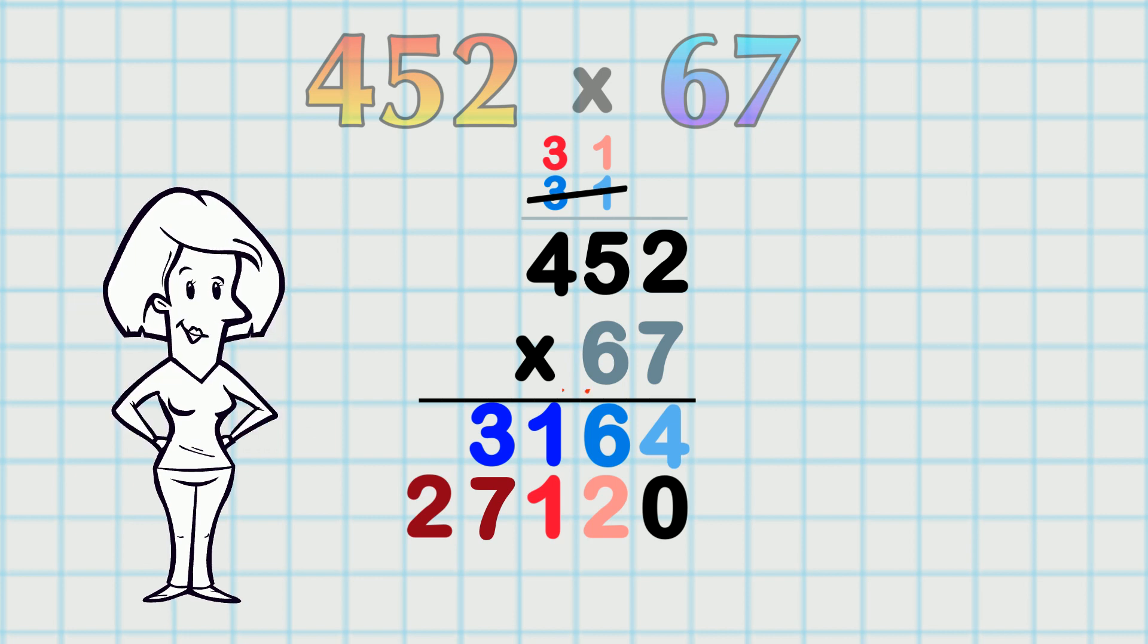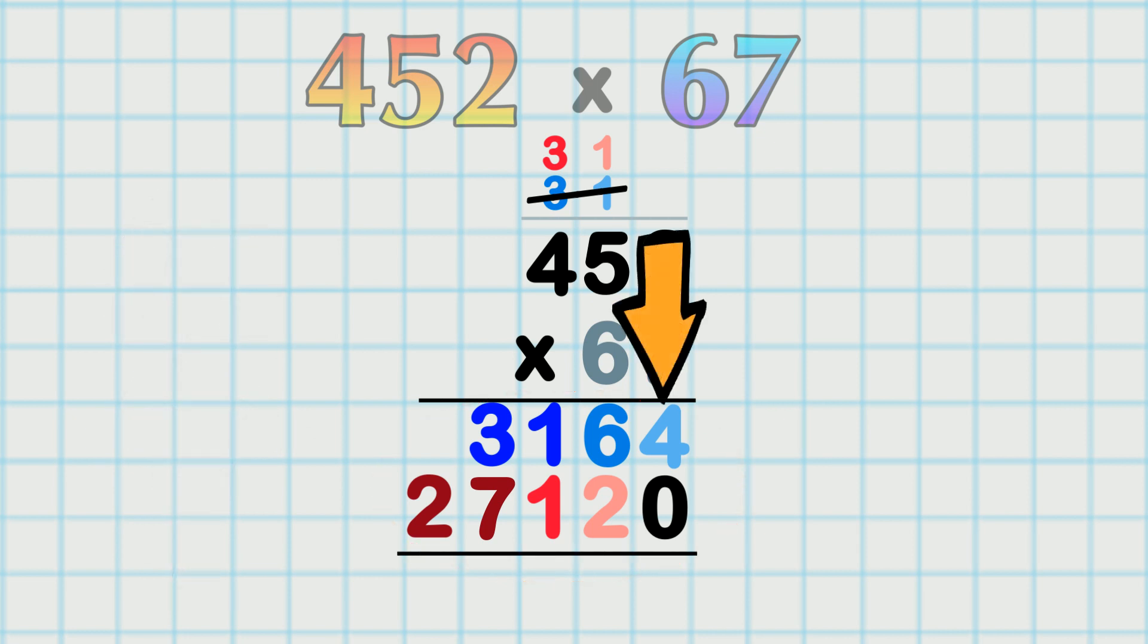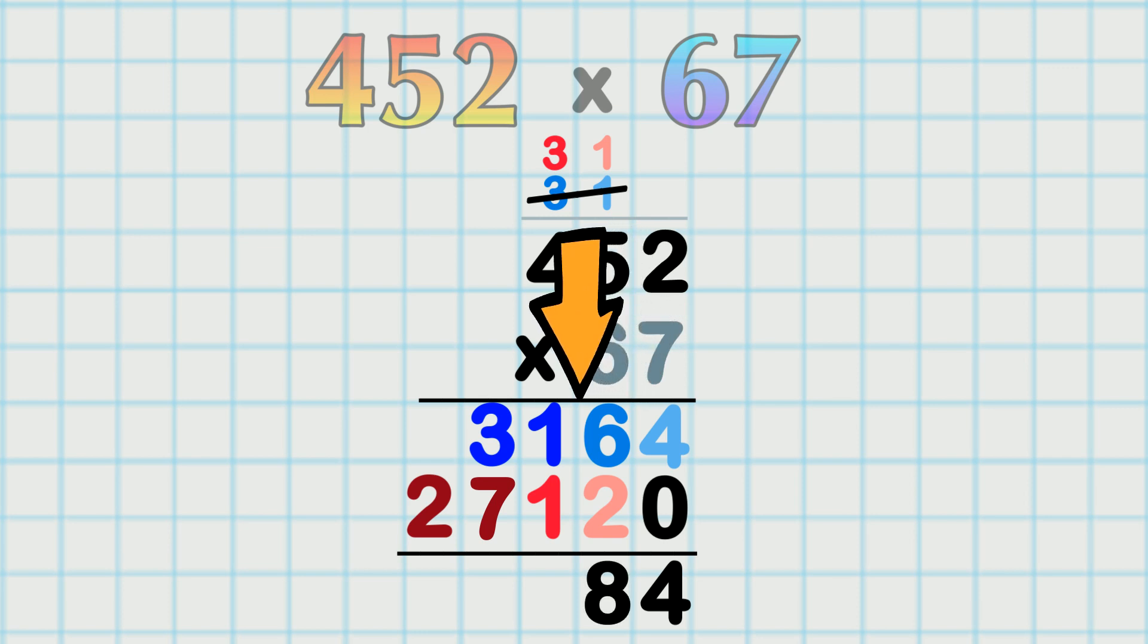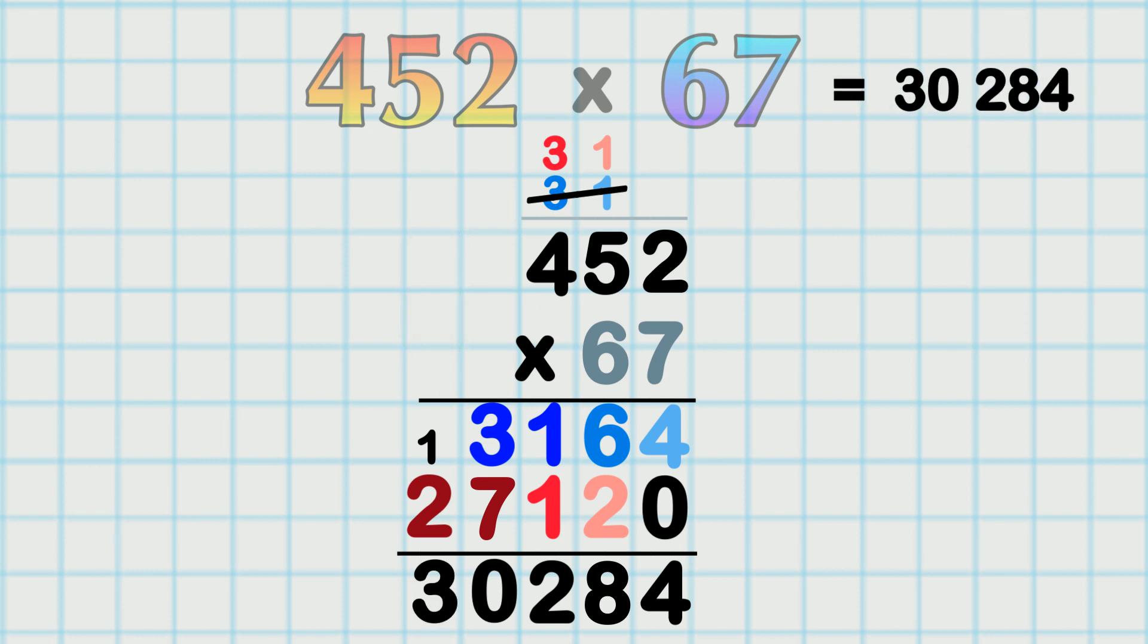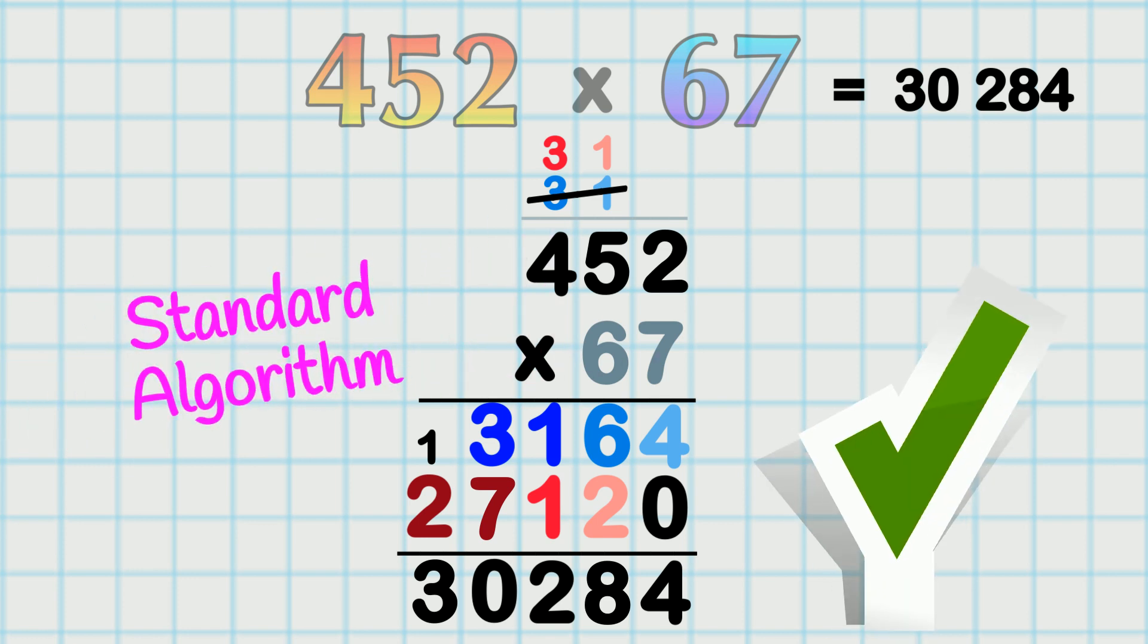Now we add both rows to solve the problem! So in the ones column, we've got 4. Then 6 and 2 is 8. Next, 1 and 1 is 2. 3 and 7 is 10. And 1 and 2 is 3. Our answer is 30,284. And that's the standard algorithm in use!